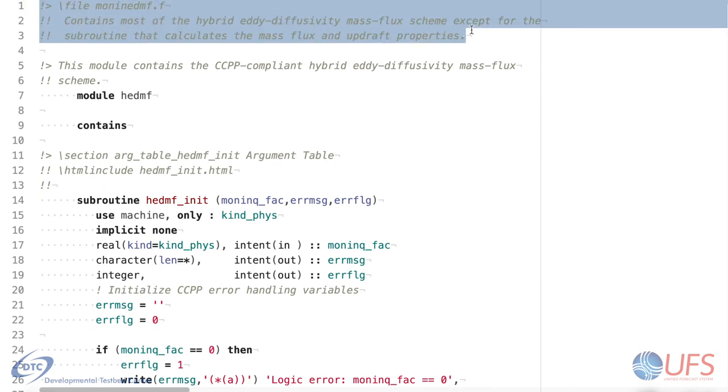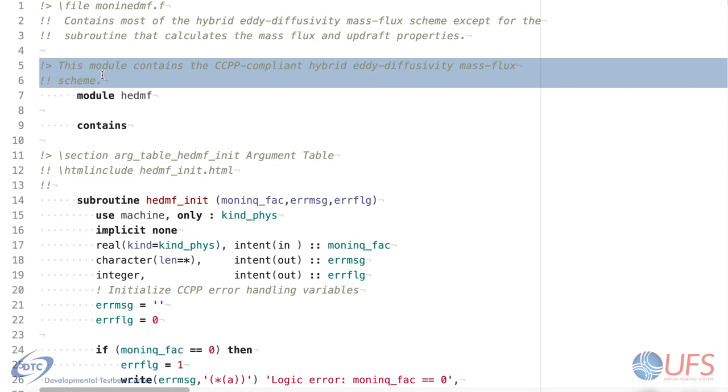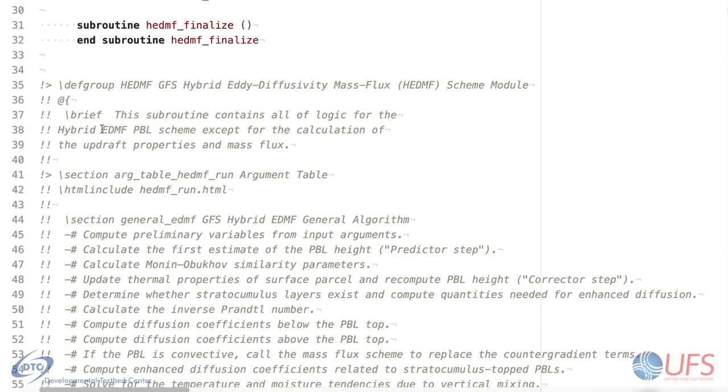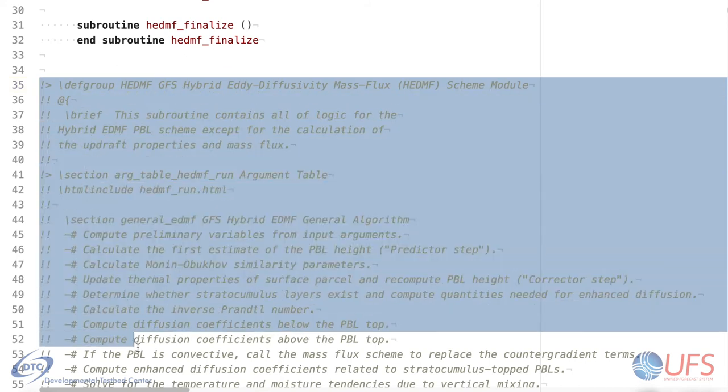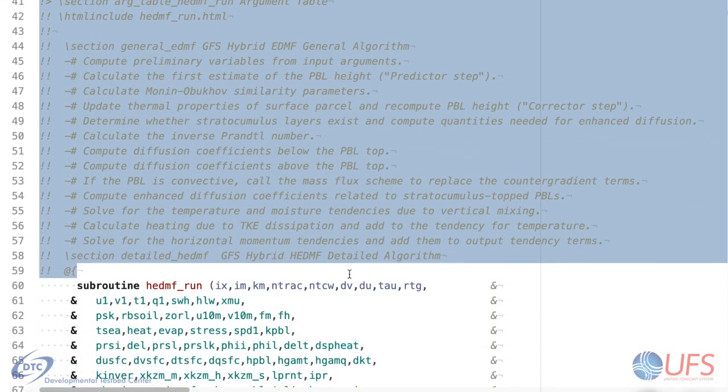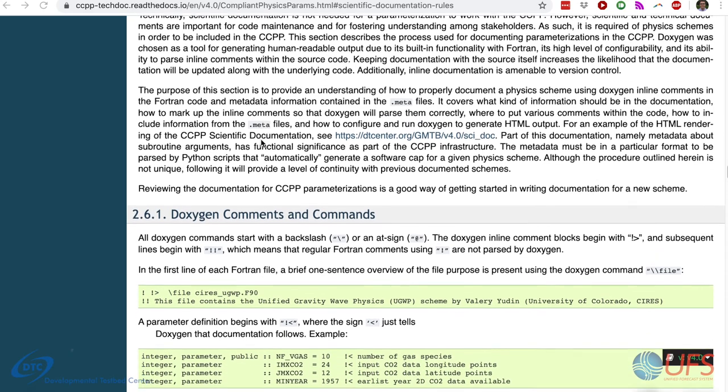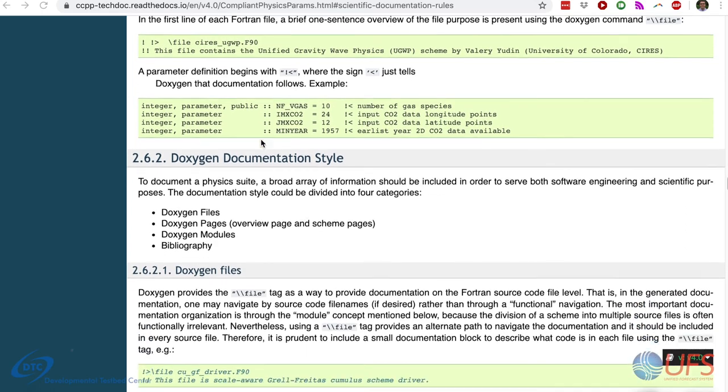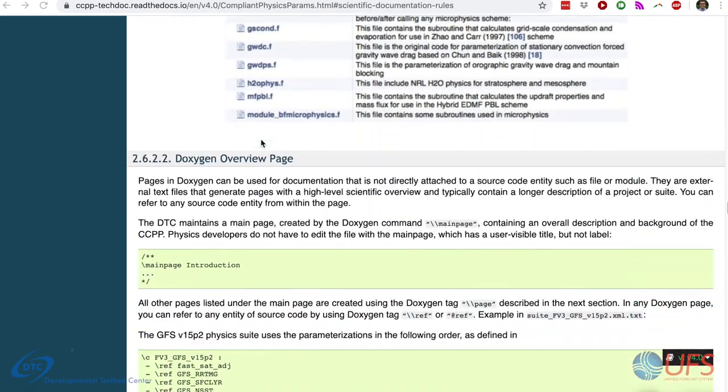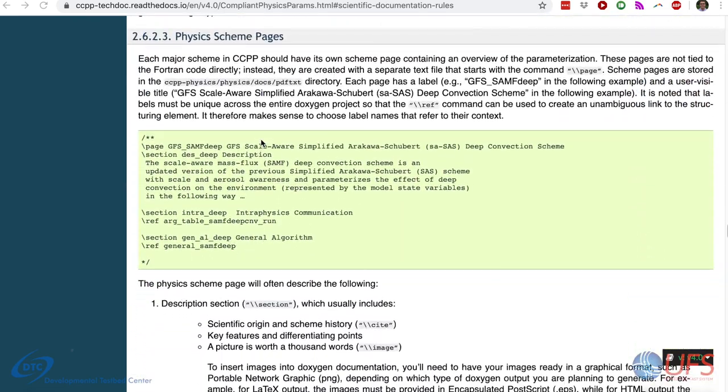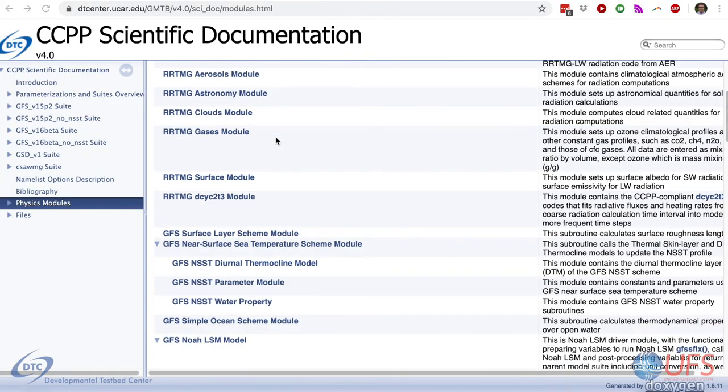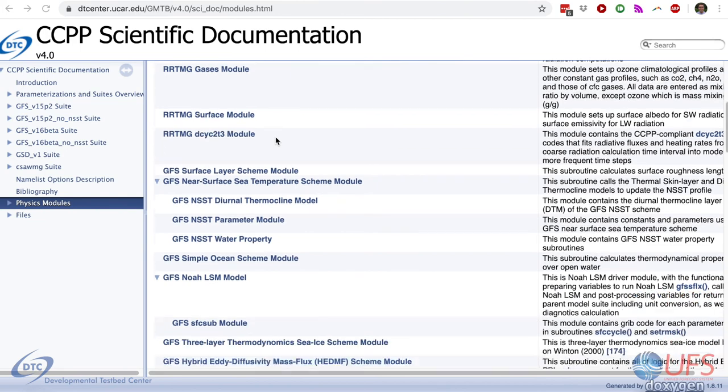Documenting a CCPP compliant scheme makes use of specially formatted, in-source comments. These comments are parsed by the Doxygen software to produce human-readable content while being subject to version control along with the rest of the code. Although such documentation is not required for the scheme to work within the CCPP software framework, it is highly encouraged for developers to adequately document their algorithms for future maintenance and potential improvement. Detailed instructions for adhering to the desired format are included on the CCPP website via link number 2 in the description, and many examples exist within the existing CCPP repository for format replication as well.